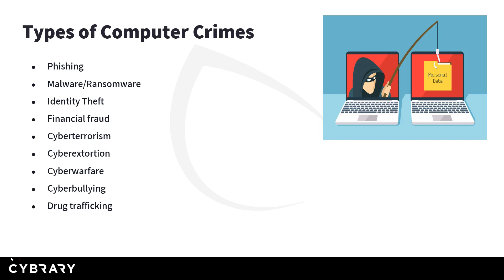Other computer crime types include identity theft and financial fraud. Cyber terrorism involves using computer systems to further propaganda and intimidate a group of people — for example, on a religious basis. Cyber extortion is where a criminal hacker, for instance, accesses someone's webcam, obtains compromising photos, and emails a threat to release them unless the victim complies.